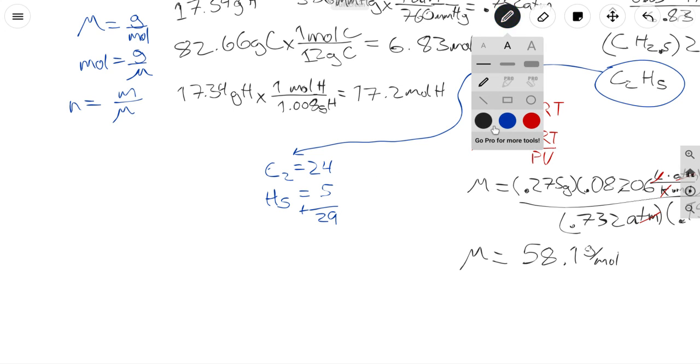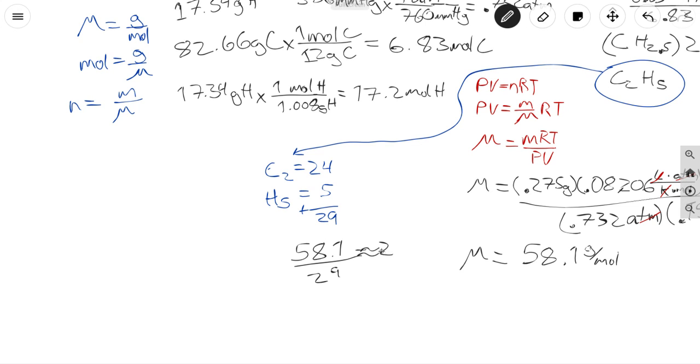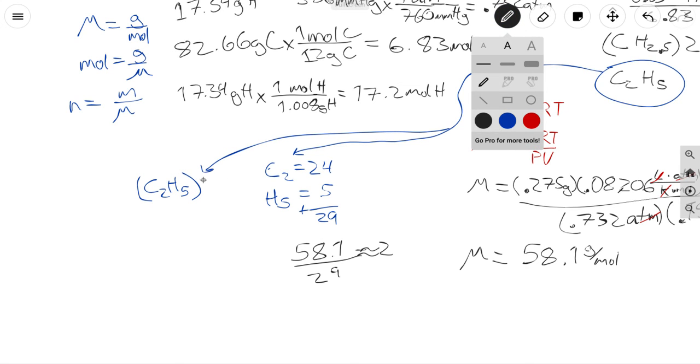And then, so like I said earlier, what we're going to do is we're going to divide the molar mass that we found here by the empirical formula mass. This will give you about 2. So then we're going to go ahead and multiply the empirical formula by 2, and then that will give us a molecular formula. So C4H10 is our molecular formula.